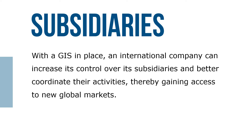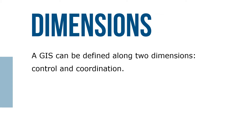With a GIS in place, an international company can increase its control over its subsidiaries and better coordinate their activities, thereby gaining access to new global markets. GIS can be defined along two dimensions: control and coordination.